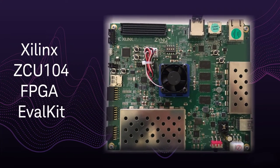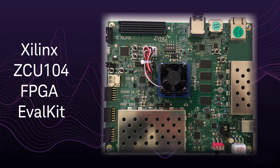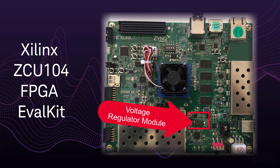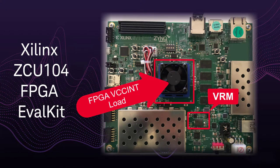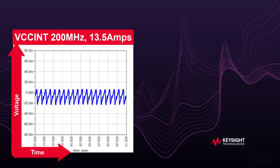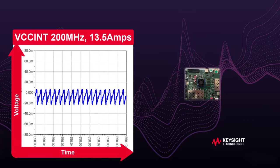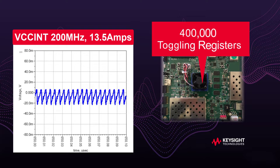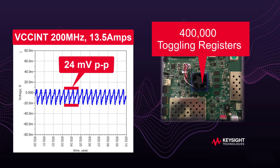Take this Xilinx VCU-104 eval kit. Look at the high current power delivery on the main VCC-INT power rail from the voltage regulator module to the FPGA load, also called the SYNC. When I plot dynamic voltage versus time while switching 400,000 registers at 200 megahertz, I get 24 millivolts peak-to-peak voltage ripple with 13.5 amps DC current.